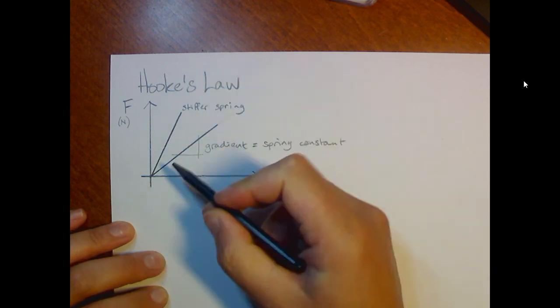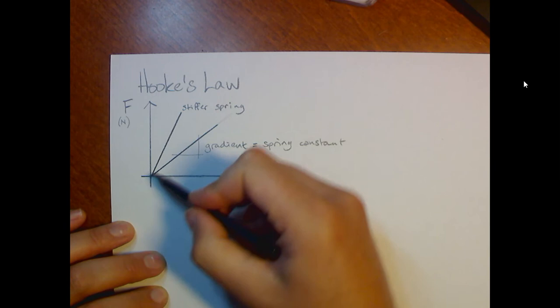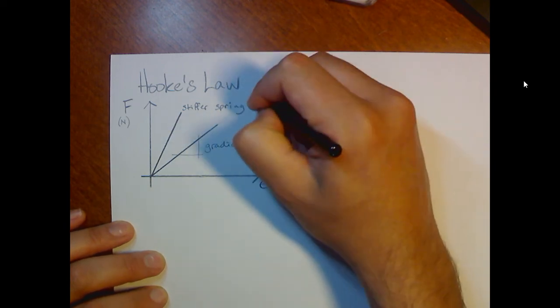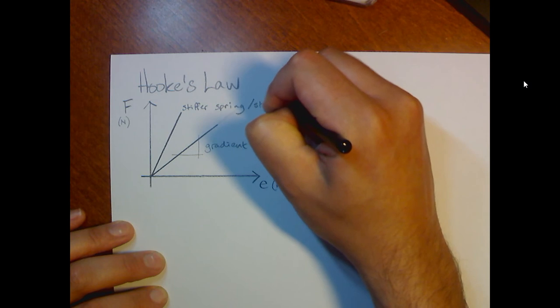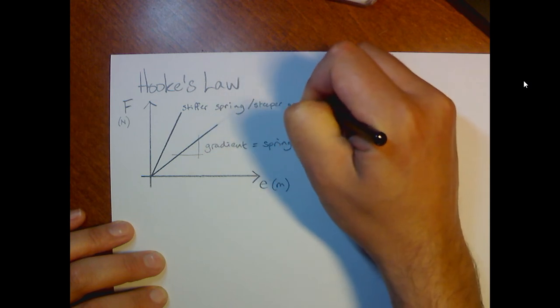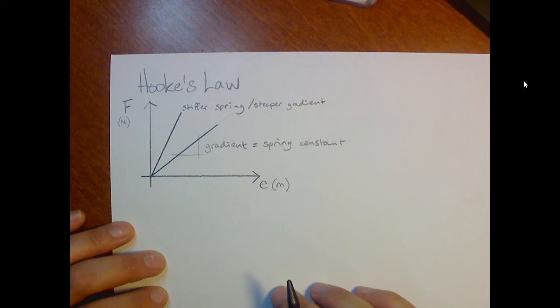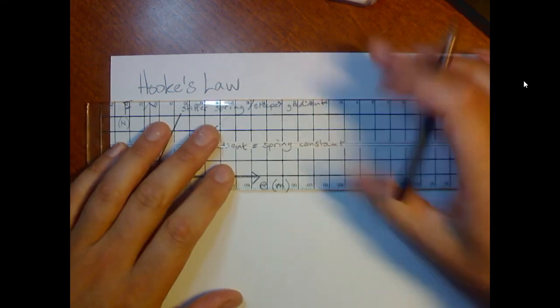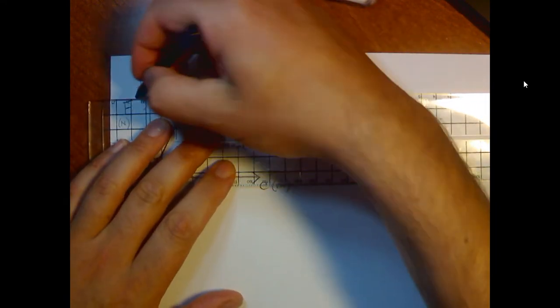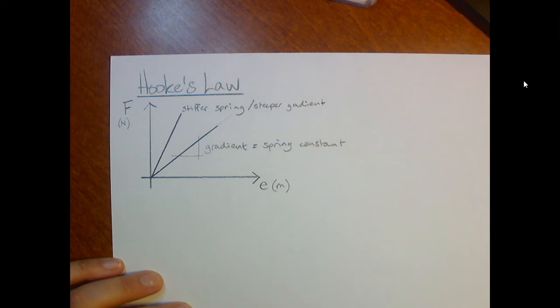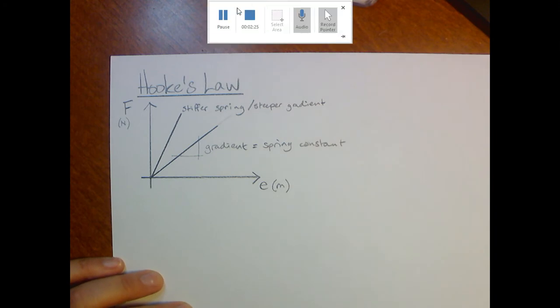We could do the same experiment with that stiffer spring and we could plot the data and we would end up with a steeper gradient. Now, one thing that's not very perfect about this particular way of doing it is that because we're not using real springs, we can't overload the spring.